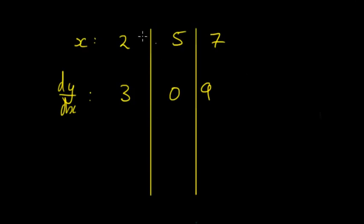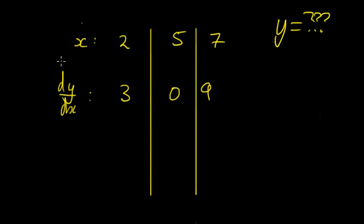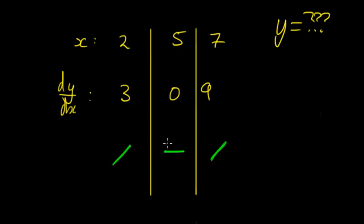Lastly, here's a table where we don't know the equation y = ?. From the table: x = 2, 5, 7, with dy/dx = 3, 0, and 9 respectively. Graphically, the gradient is positive, then flat at the stationary point, then positive again. Since the gradient is positive on both sides of the stationary point, this is going to be a positive stationary point of inflection.